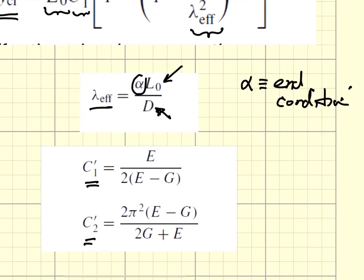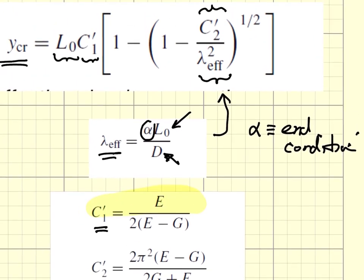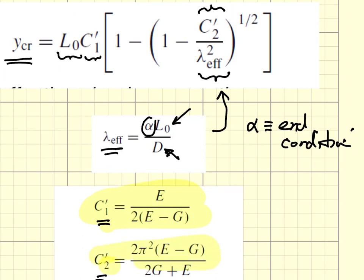How are you supporting the ends of the coil spring? This becomes a normalized effective length. You plug it into this equation, and you use these elastic constants C1' and C2', which are simple combinations of the elastic modulus and shear modulus. From that, you can calculate a critical buckling displacement.